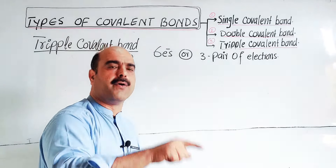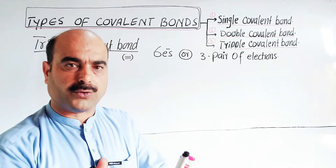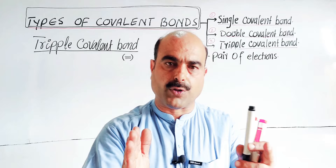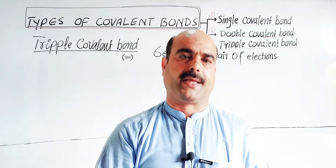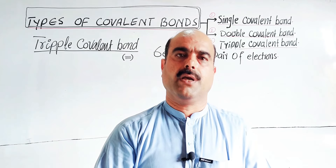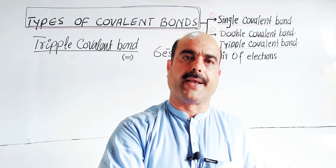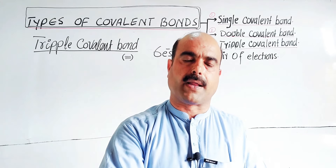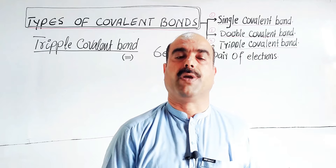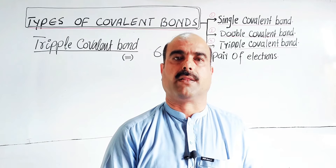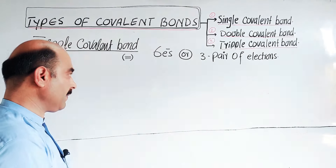Each atom contributes three electrons to the bond, giving a total of six electrons shared. Since a covalent bond forms between two atoms, and the atoms can be similar or different, each atom provides three electrons. This is the mutual and equal sharing that defines the triple covalent bond.